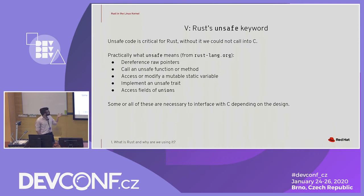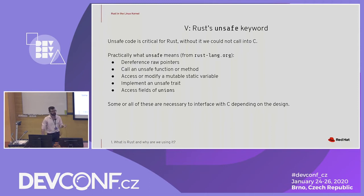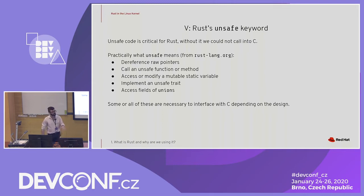Rust's unsafe keyword allows us to do a few things: we can dereference raw pointers, call code that has been marked as unsafe, and access or modify mutable static variables. These kinds of operations are often needed when doing some sort of FFI, and so this unsafe keyword is really crucial for building C into the actual nuts and bolts of the language.